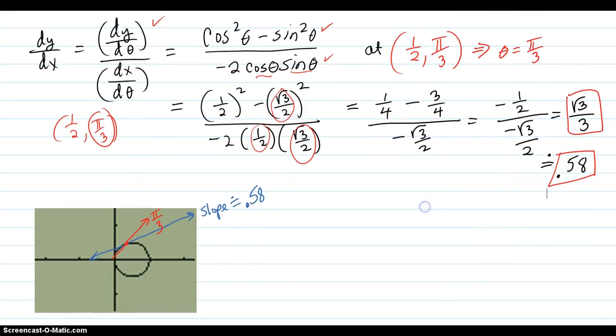And that verifies on our picture that the slope, the tangent line to the curve at that point which was radius one-half, angle pi over three in polar, that looks about right, slope 0.58. A shallow slope, definitely less than one, but positive.